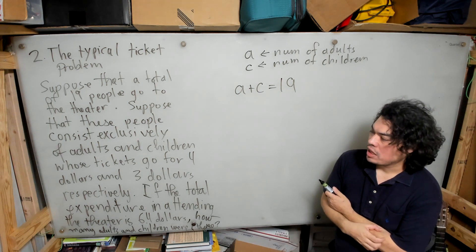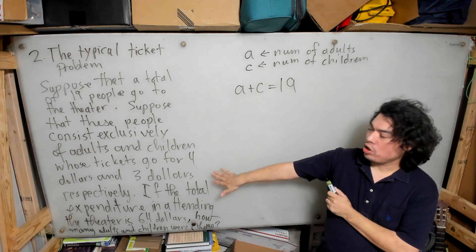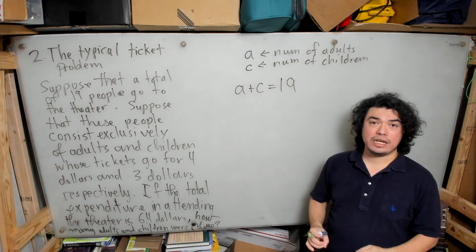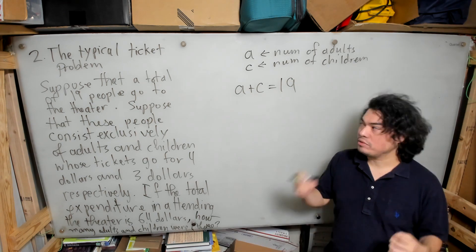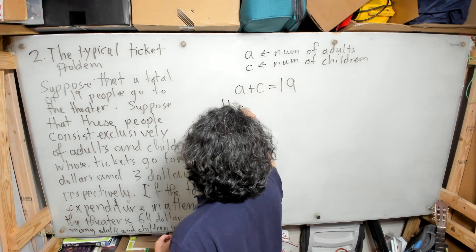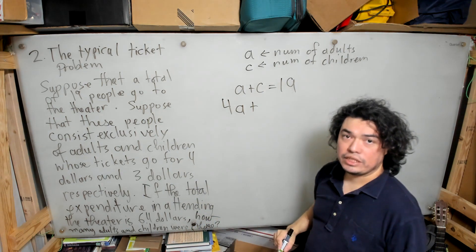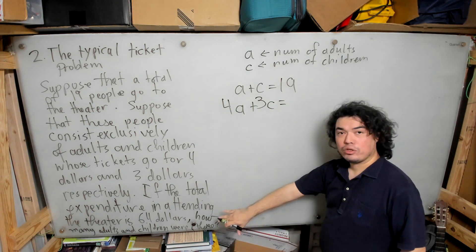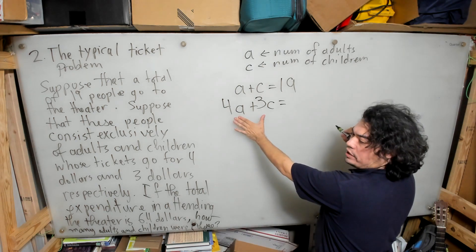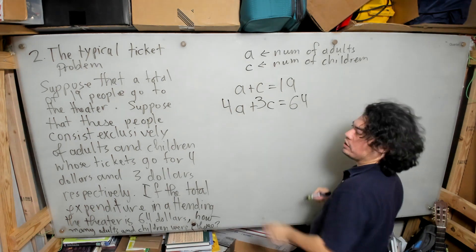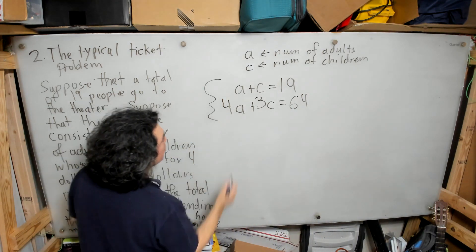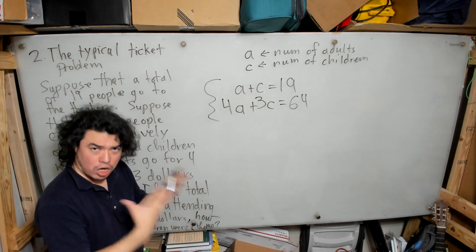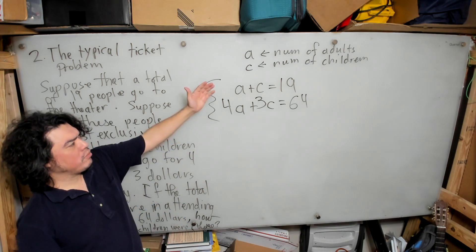They also tell us that tickets for adults go for four dollars and tickets for children go for three dollars. So the cost for adults attending is four times a, and the cost for children attending is three times c, written as 3c. Since the total expenditure was sixty-four dollars, we get the equation 4a plus 3c equals 64. We have now translated this problem into a system of equations.